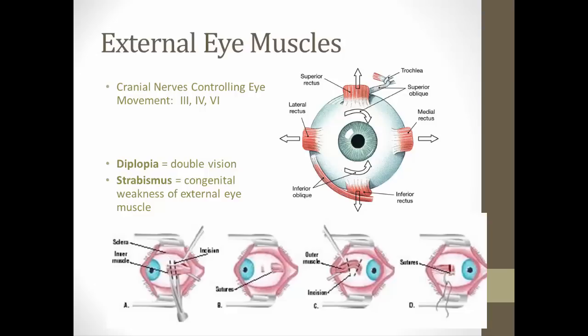The external eye muscles are also accessory structures — there are six of them. You should know which cranial nerves control those eye movements: cranial nerve three (oculomotor), cranial nerve four (trochlear), and cranial nerve six (abducens).